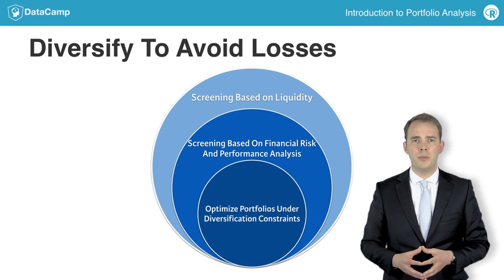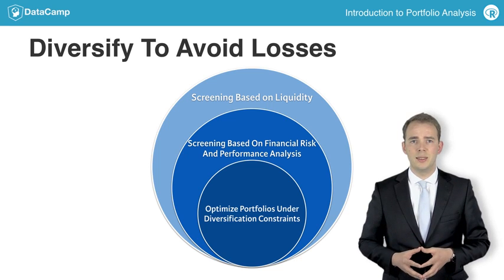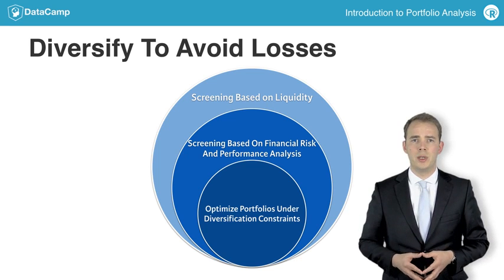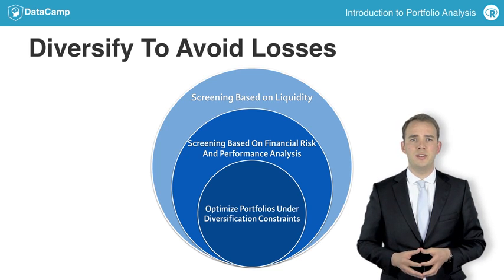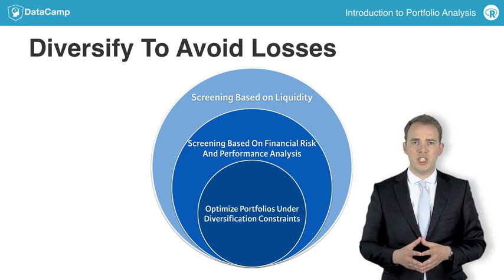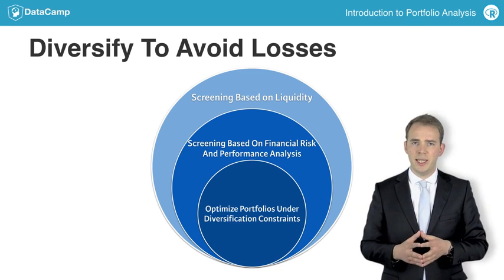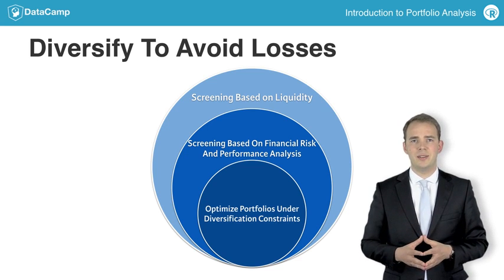Whenever you buy a stock or bond at some price, this price will change in the future. If it increases, you make a profit. If it decreases, you make a loss. It's the expectation of gains that needs to be balanced against the risk of losses.